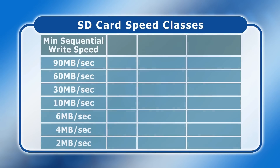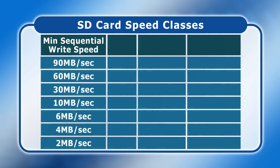Most SD cards are labelled with up to three different types of speed class, all of which indicate the minimum sequential write speed that a card is capable of. The initial SD card speed classes were Class 2, Class 4, Class 6 or Class 10, with a number appearing in the letter C, and the classes indicating a minimum write speed of 2, 4, 6 or 10 MB a second.